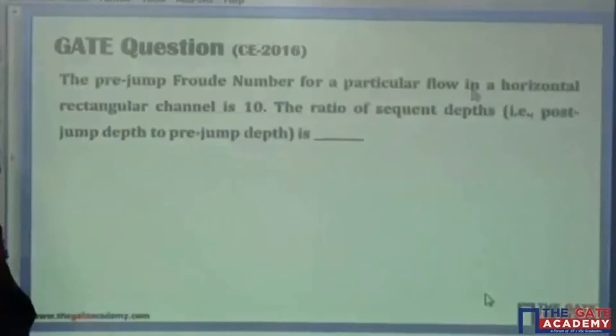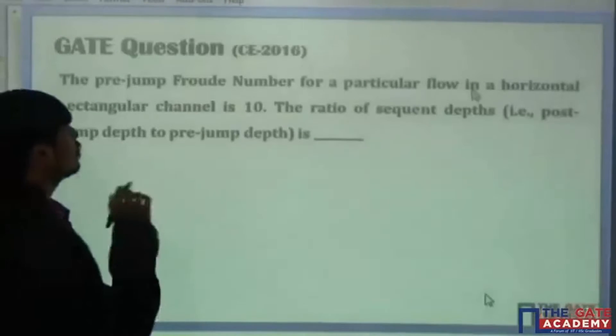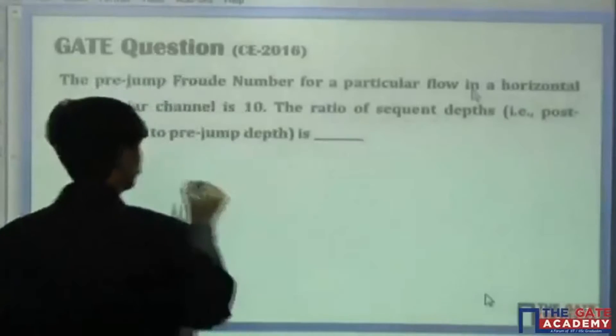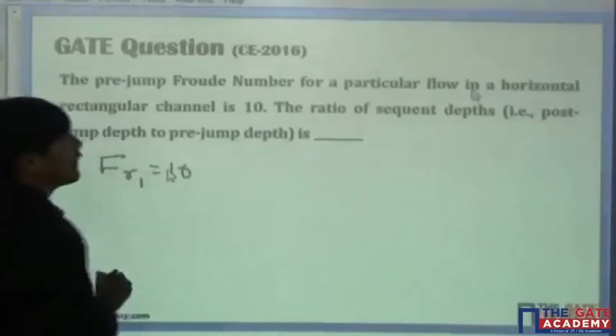Next question: pre-jump Froude number for a particular flow in a horizontal rectangular channel. The pre-jump Froude number Fr1 is given to you as Fr1 equals 10. The ratio of sequent depths is what we need to find.